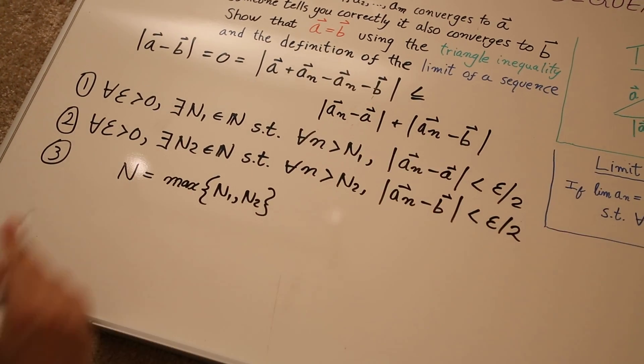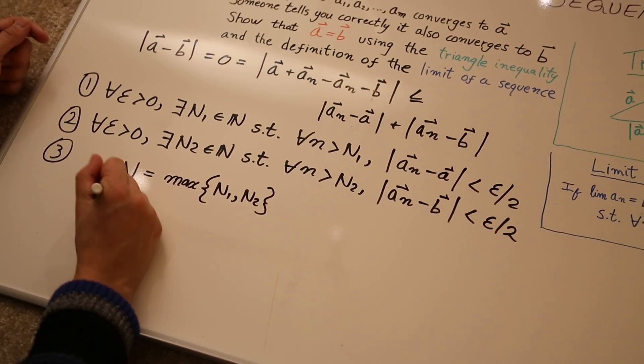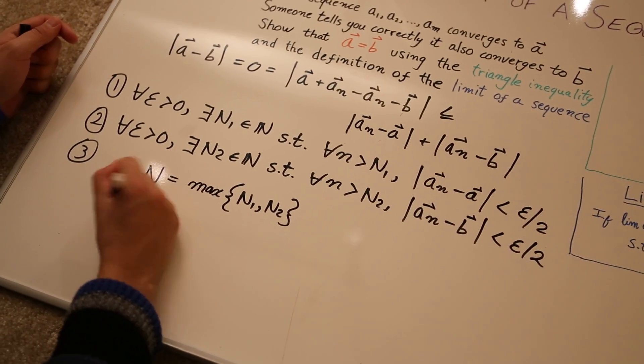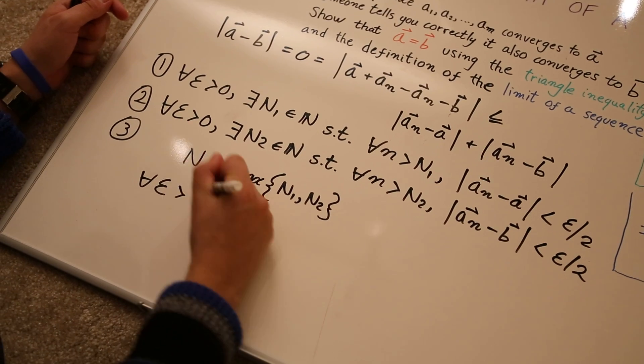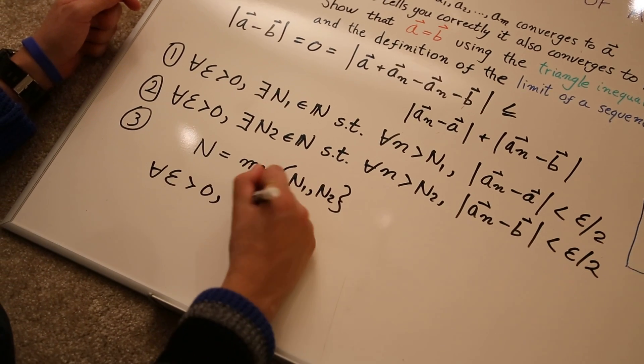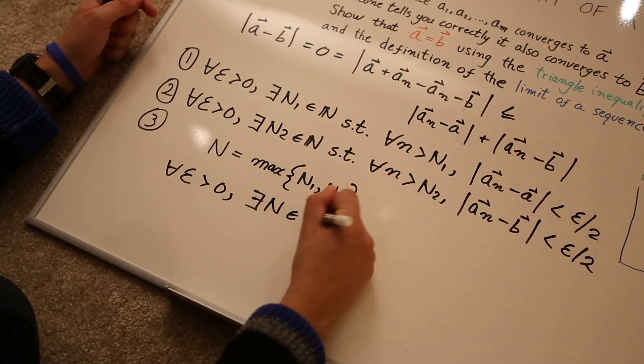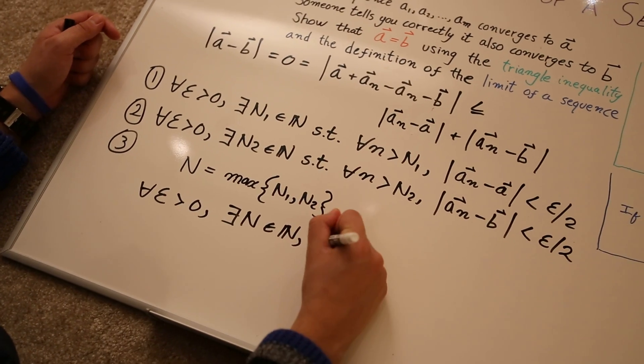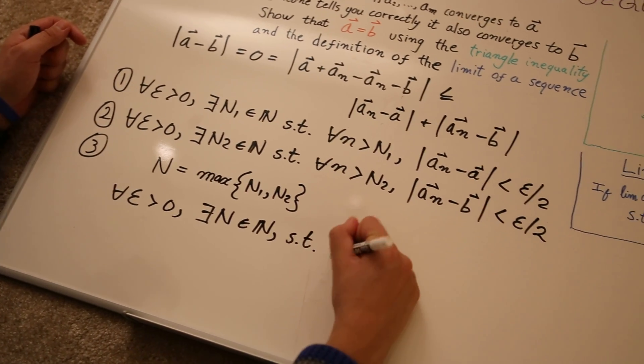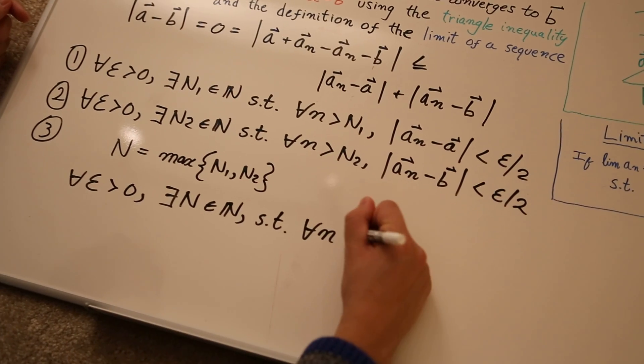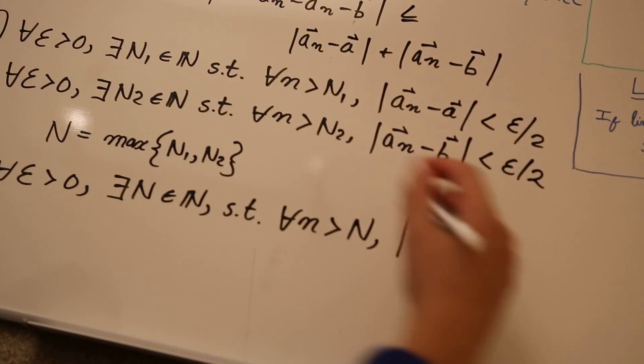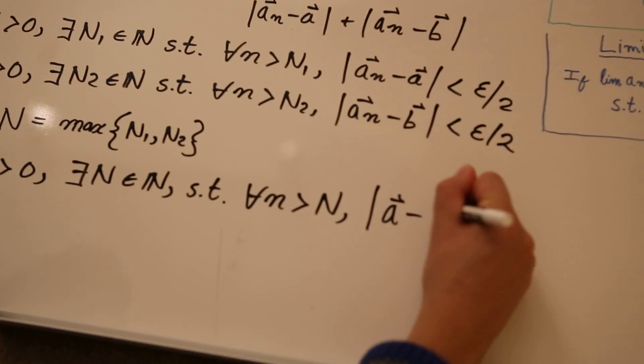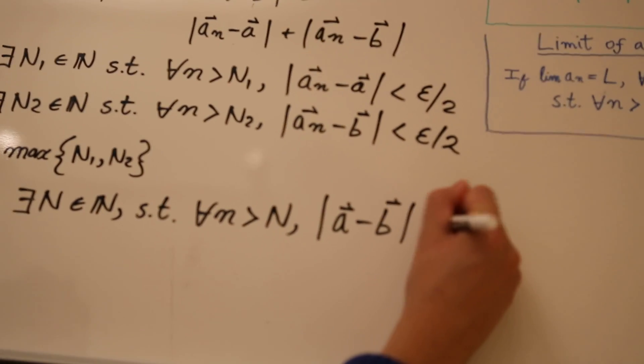Now, we can apply the definition of the limit of the sequence again. And we say, for all epsilon greater than zero, there exists some N that is a natural number, such that for all little n greater than N, then A minus B is less than epsilon.